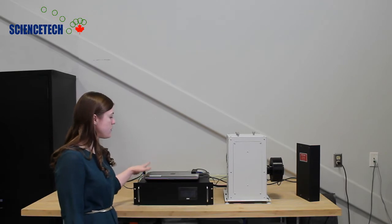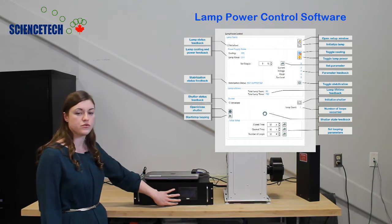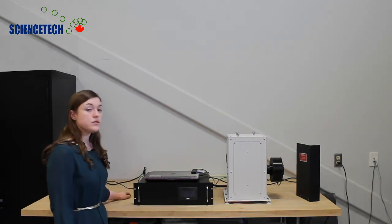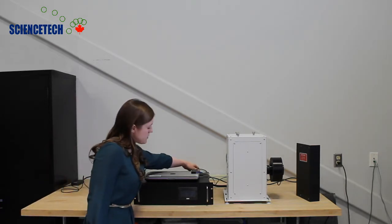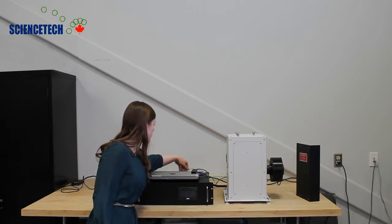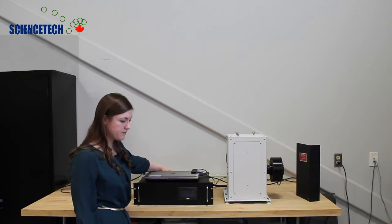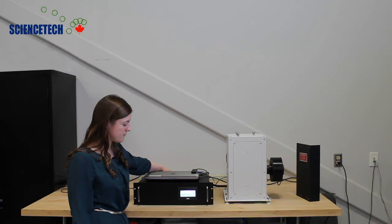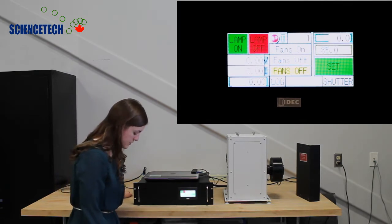To operate the system you can operate it from our software entirely or you can control it directly from the touchscreen power supply. To use the XLH series lamp housings you need to first turn on the power supply. You can see it's initialized there. Just hit OK and it brings you to the main screen.